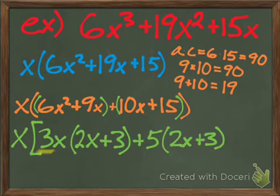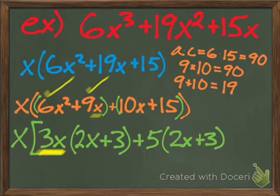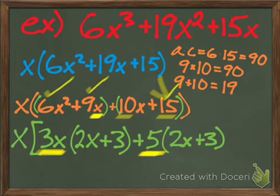And then 3x is the GCF because 6 and 9 are both divisible by 3, and there is a single x you can factor out. 5 is the GCF over here because 10 and 15 are both divisible by 5, and there is no x on the 15, so you can't factor out an x from both of those terms.